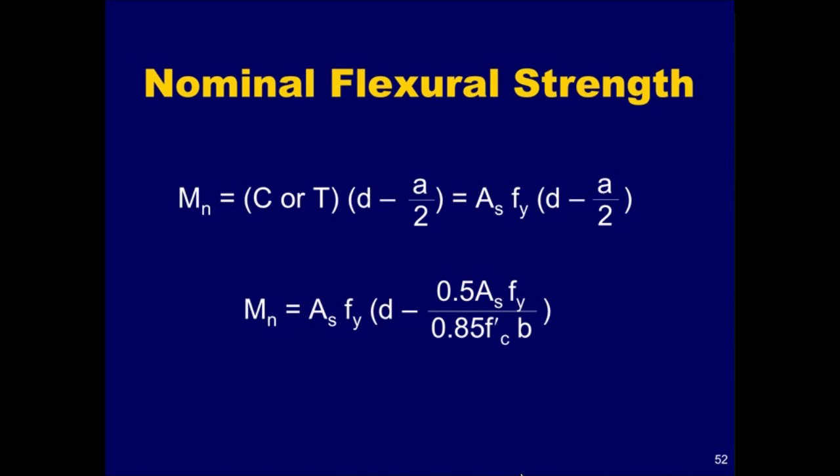These equations can be used to determine the nominal flexural strength of one-way slabs, where it is common to design such slabs as one-foot wide design strips, that is, taking B equal to 12 inches. The nominal flexural strength of flanged sections and rectangular sections with compression reinforcement can be derived in a similar fashion. The PCA Notes on ACI 318-05 has a comprehensive discussion on how to determine the nominal flexural strengths in these cases. More information on this publication can be found by clicking on the resource link.